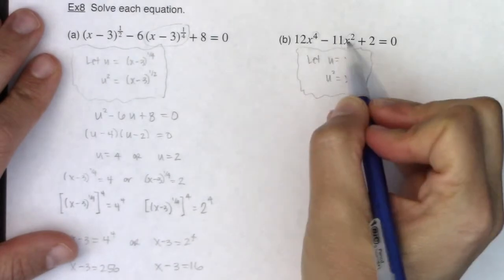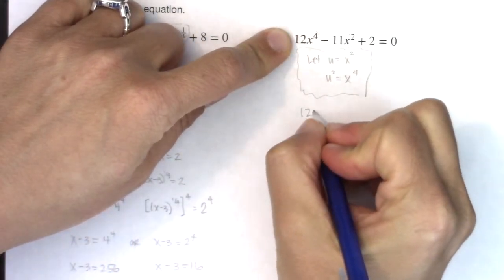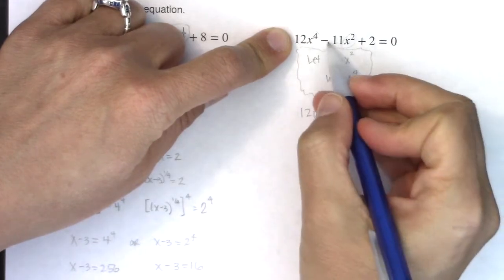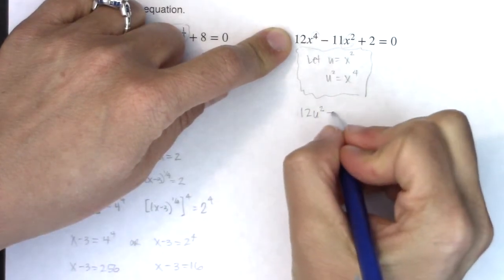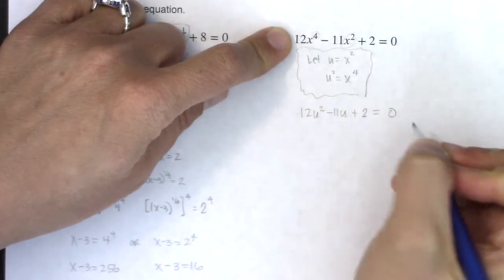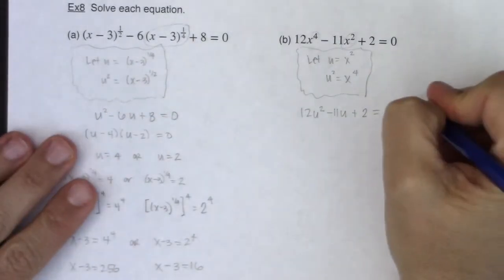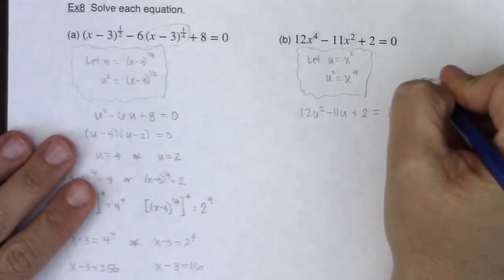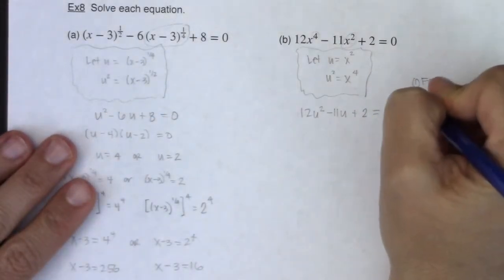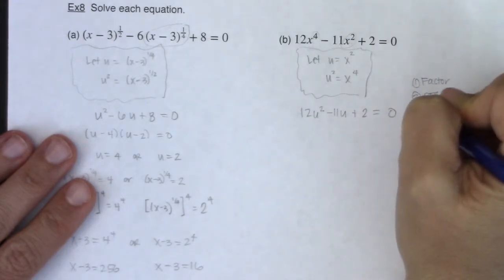All right, so as we're looking at this, instead of 12x to the fourth, I'm going to write 12u squared. Instead of minus 11x squared, I'm going to write minus 11u. And then I'm going to write plus 2. Okay, now it's your call. Again, you could factor, you could complete the square, or you could use the quadratic formula. So once you're here, you have those three methods. Factor, complete the square, or quadratic formula.